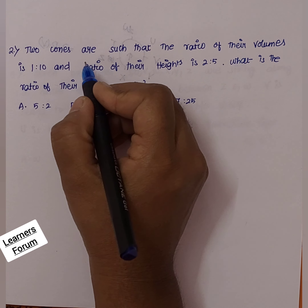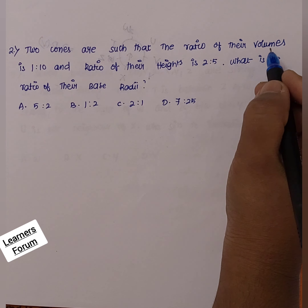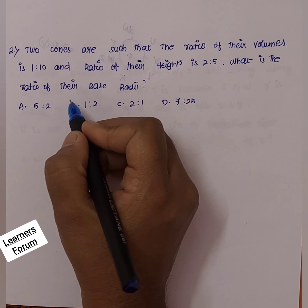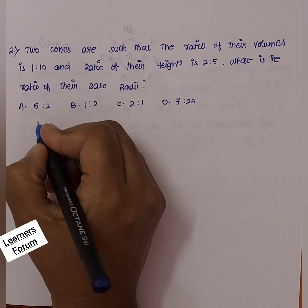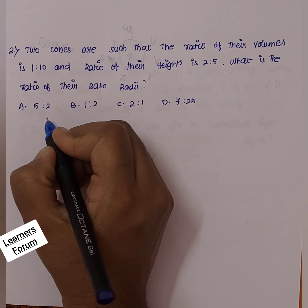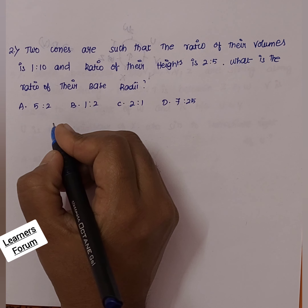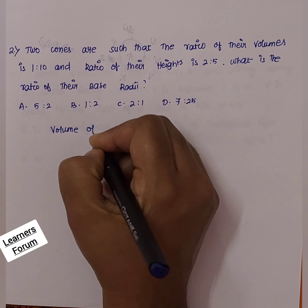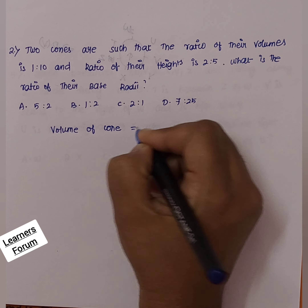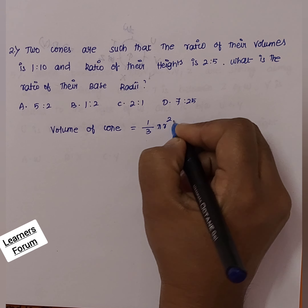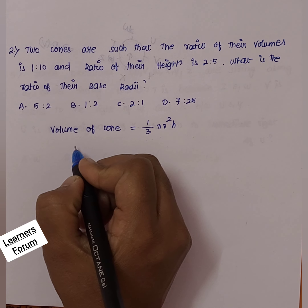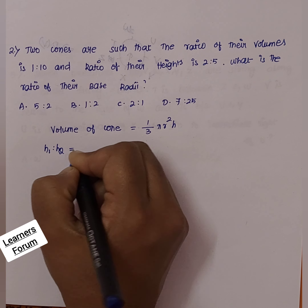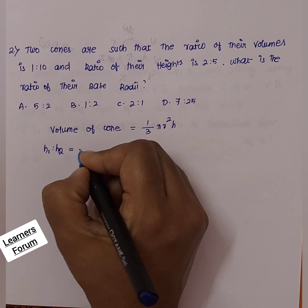Second question: two cones are such that the ratio of their volumes is 1:10 and the ratio of their heights is 2:5. What is the ratio of their base radii? To solve this, we need the formula for the volume of a cone, which is equal to one-third pi R squared H. The ratio of heights H1 to H2 is given as 2:5.